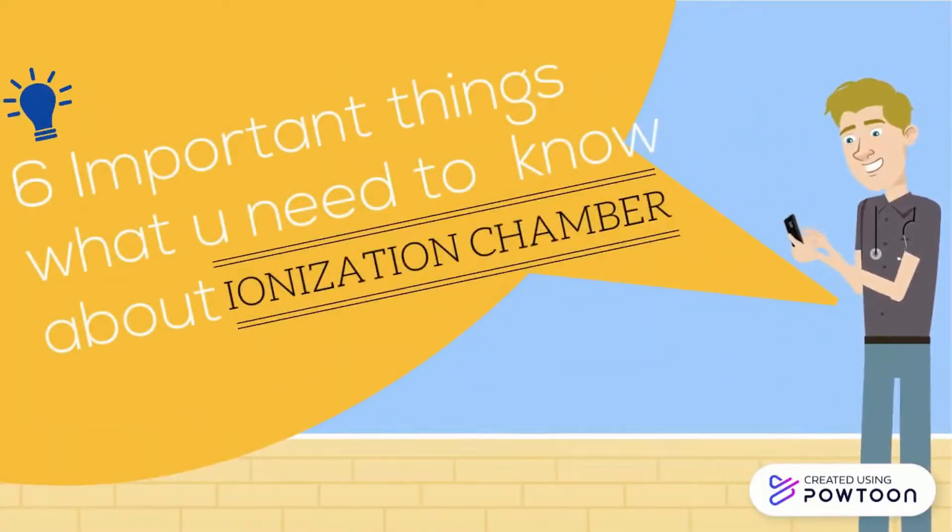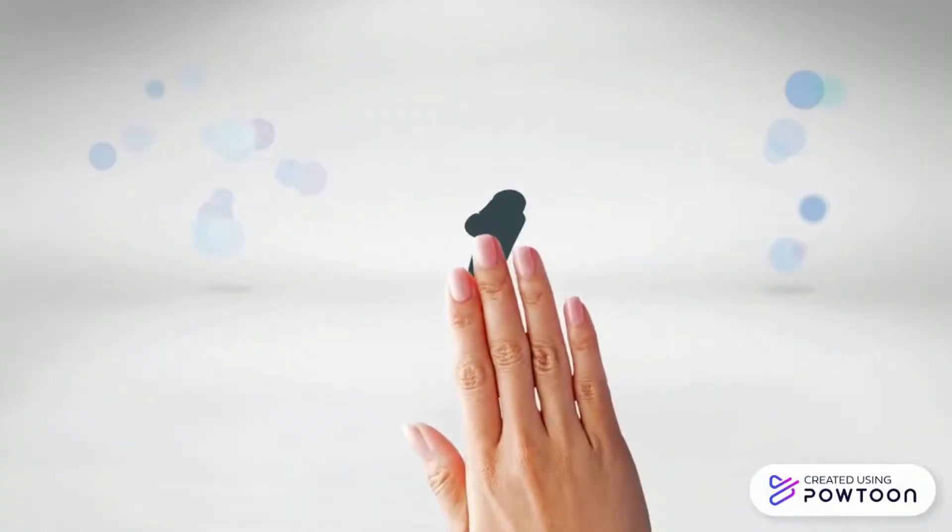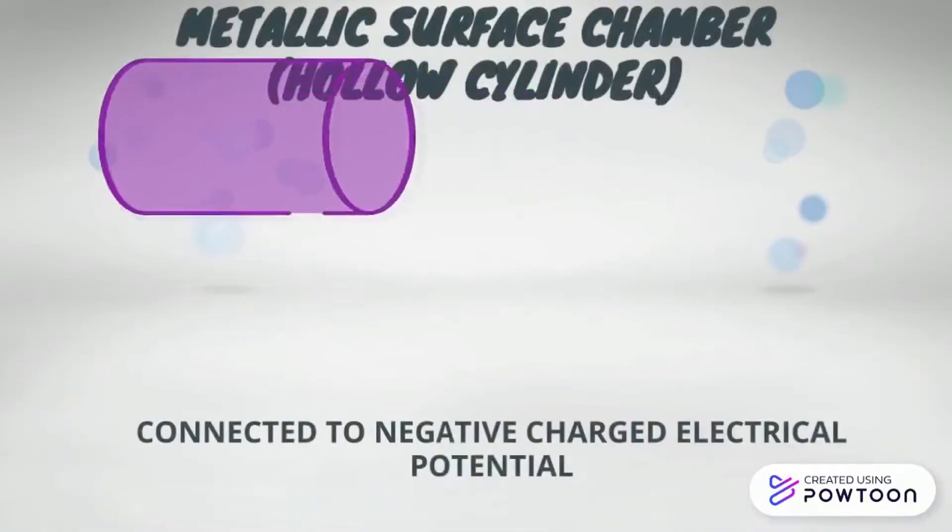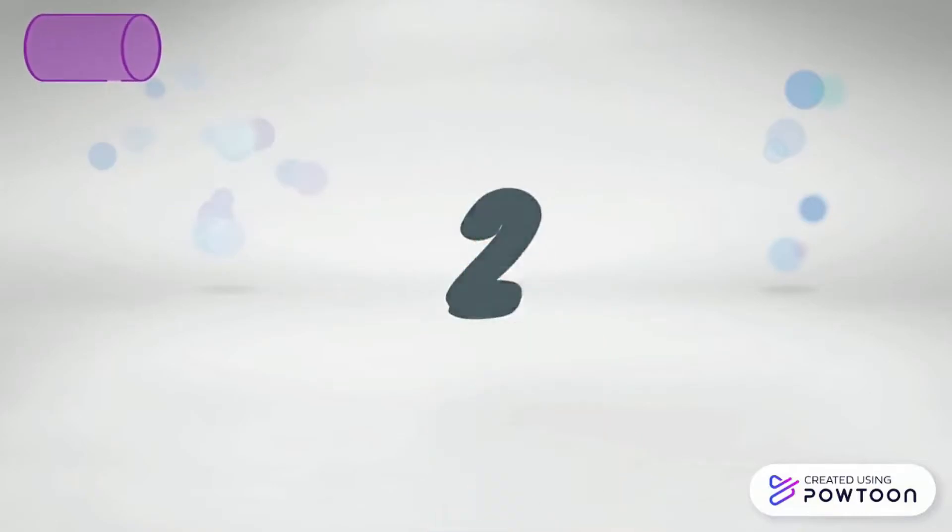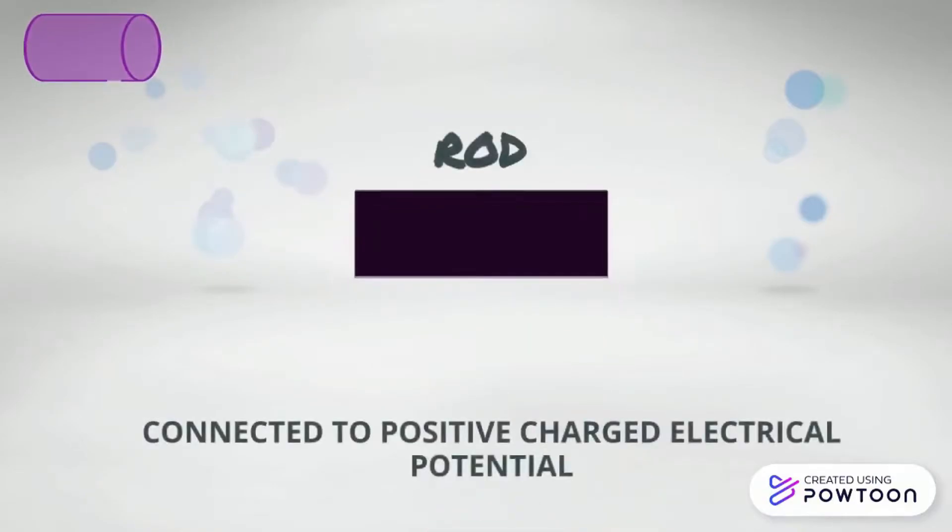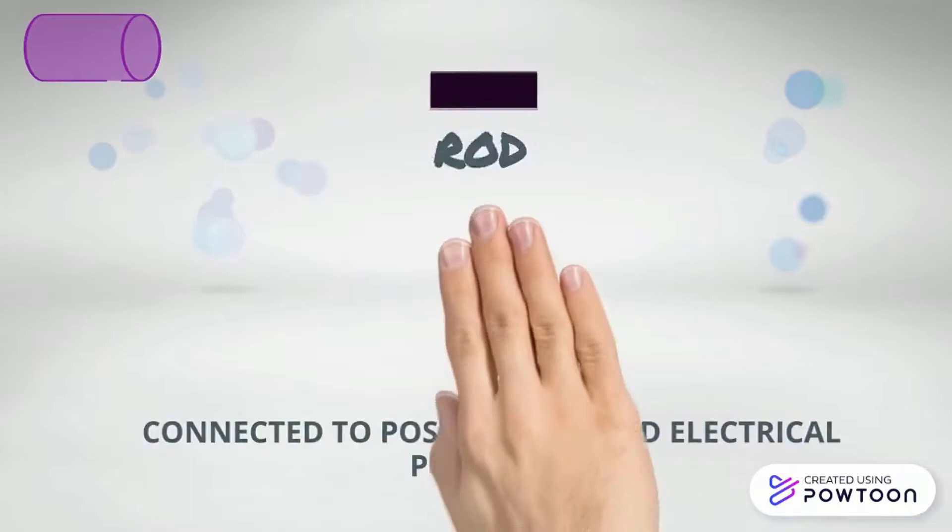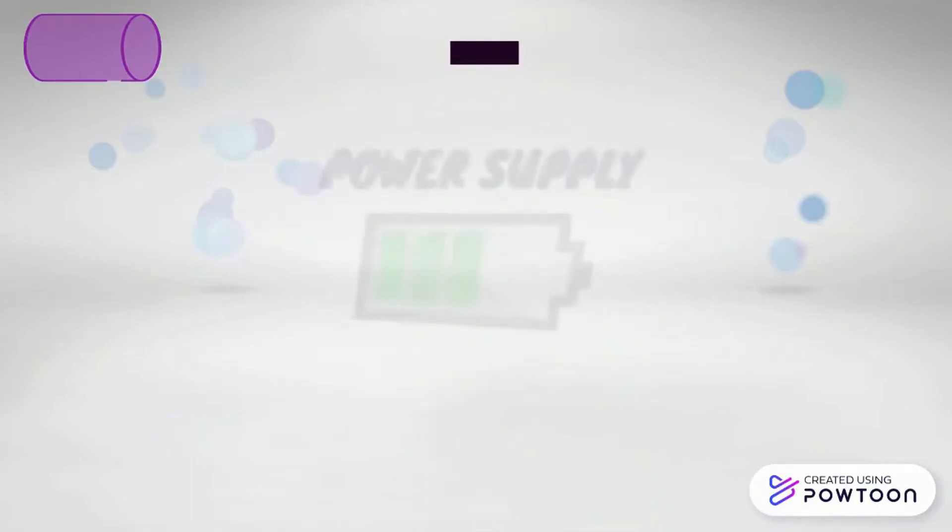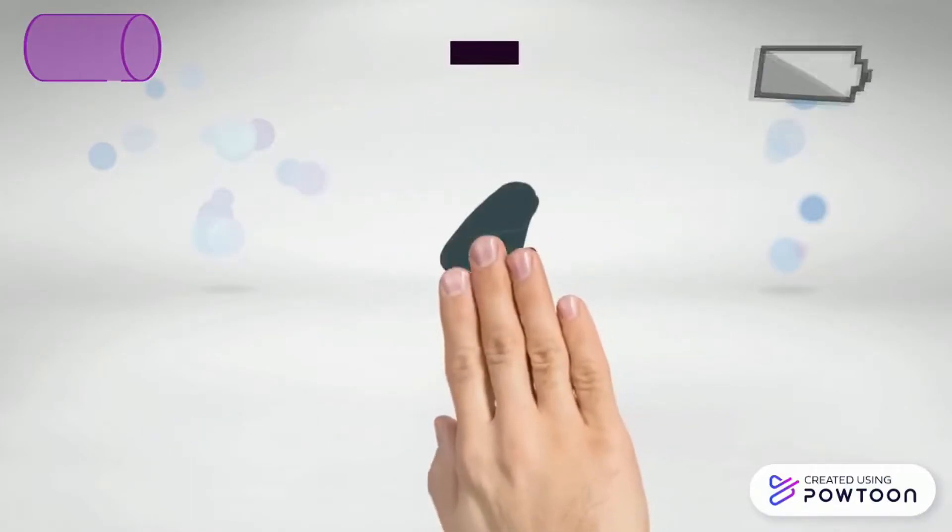Six important things you need to know about ionization chamber. First, metallic surface chamber will act as a cathode. Second, rod will act as an anode. Third, the power supply to supply the electrical potential.